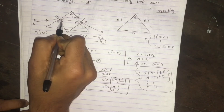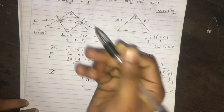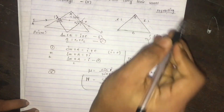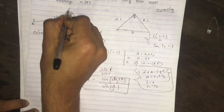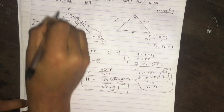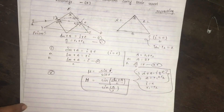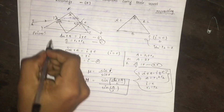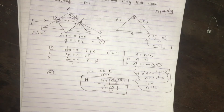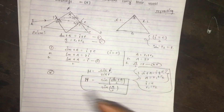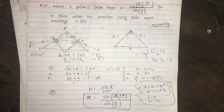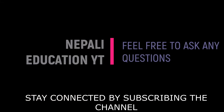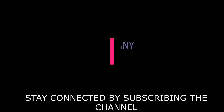D_minimum is the minimum deviation and A is the angle of the prism. This is the condition of minimum deviation for a prism.